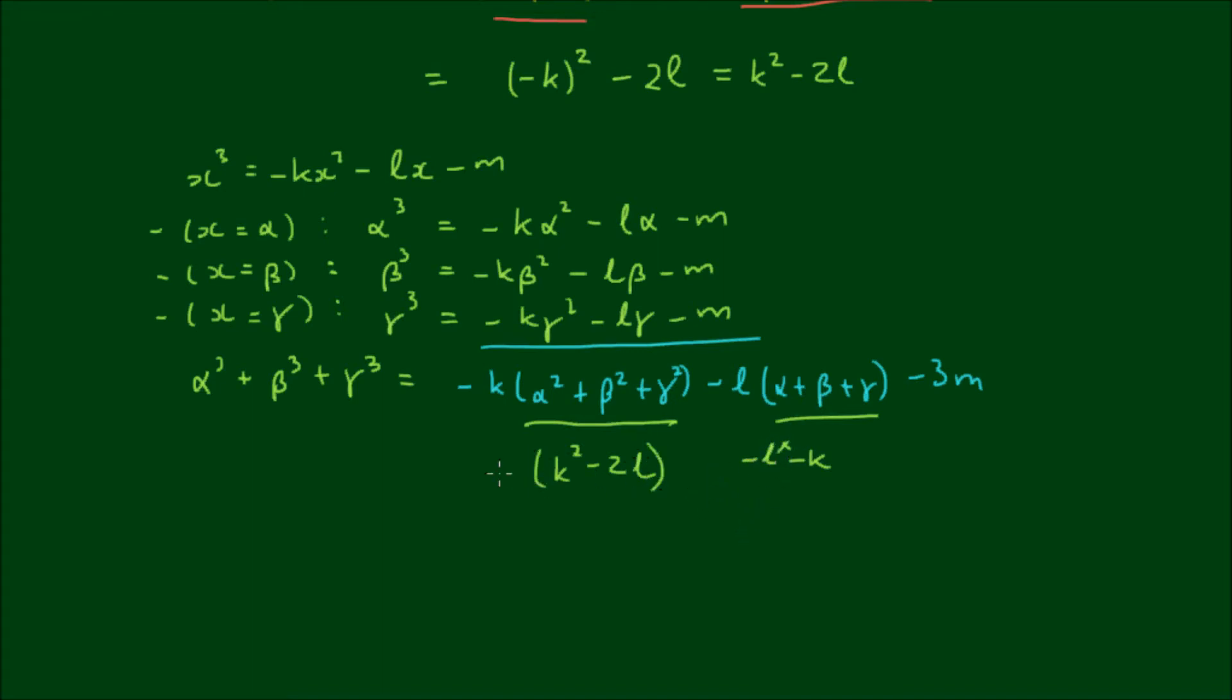Here we have minus k by (k² minus 2L), and the negative 3m remains. So in the end we have minus k³ plus 2kL plus kL and minus 3m, which then simplifies to 3kL minus k³ minus 3m.